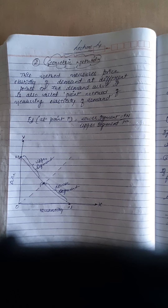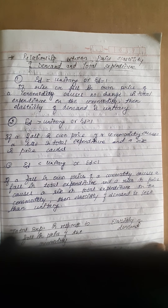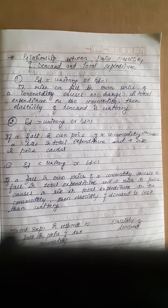Next is the relationship between price elasticity of demand and total expenditure. First: if Ed equals one (unitary), a rise or fall in the own price of a commodity causes no change in total expenditure on the commodity. So if there is no change in total expenditure, elasticity of demand is unitary.